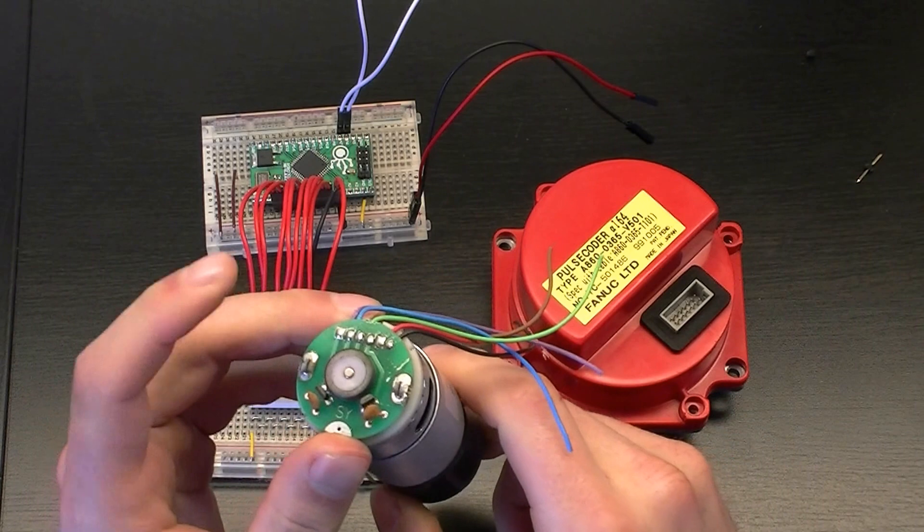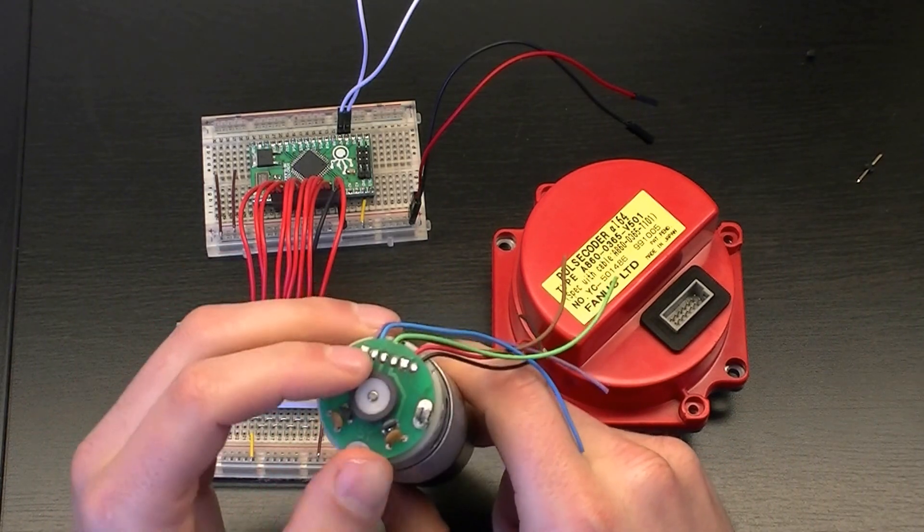Sometimes bigger, sometimes smaller. Now here you can see that the encoder is placed on the back. It's this little disk thing.